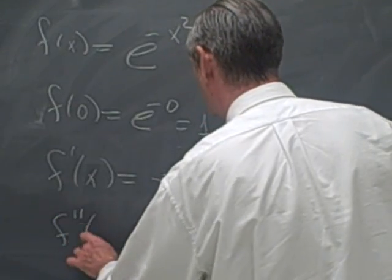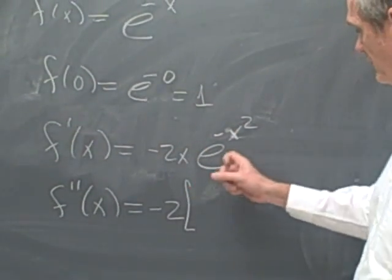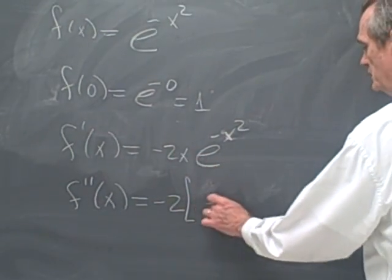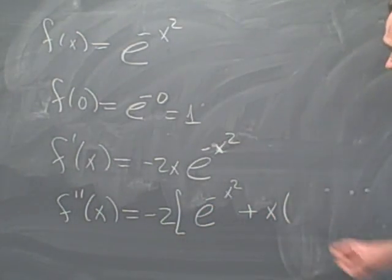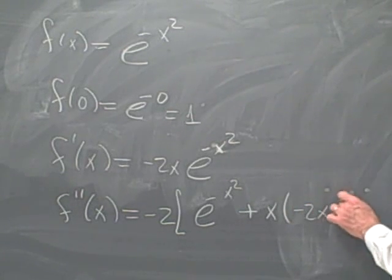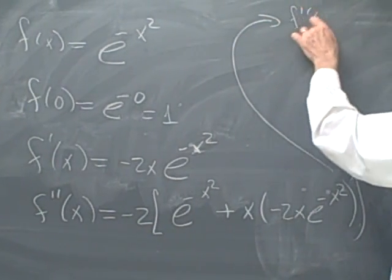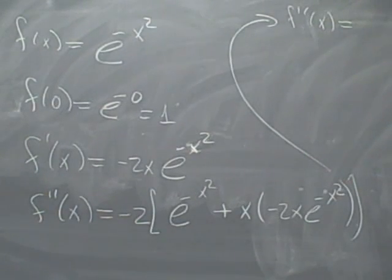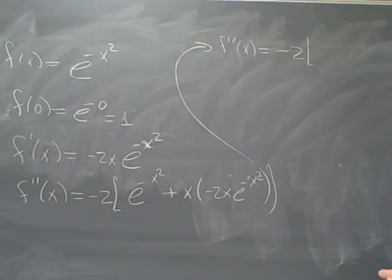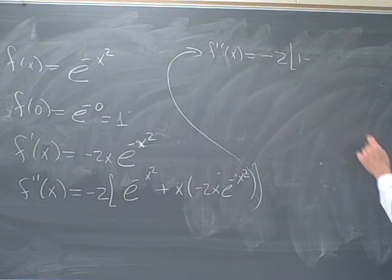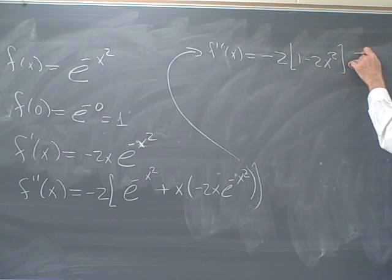I'm going to need the second derivative. The second derivative is going to be minus 2 times the derivative of this product. The derivative of x is 1, so we get e^(-x²) plus x times the derivative of e^(-x²), which was minus 2x times e^(-x²). So the second derivative, although it looks worse than the function, gives us minus 2 times (1 minus 2x²) times e^(-x²).